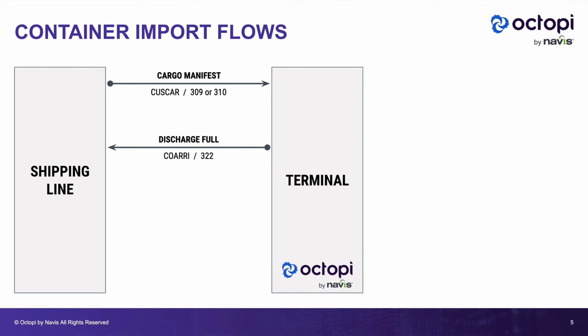That container is going to sit at the terminal for a few days until a trucker comes to pick it up. When that trucker leaves the gate of the terminal, the software system running at the terminal will record the movement and send an EDI message to let the line know that the container gated out full. That message is a CODECO message or a 322. Notice that in EDIFACT there is a specific message for a discharge — a COARRI — and one for gate moves in general — a CODECO. Whereas with ANSI-X12, the same 322 message is used for both movements; the content of the message differs so the shipping line can tell whether it's a discharge or a gate movement.